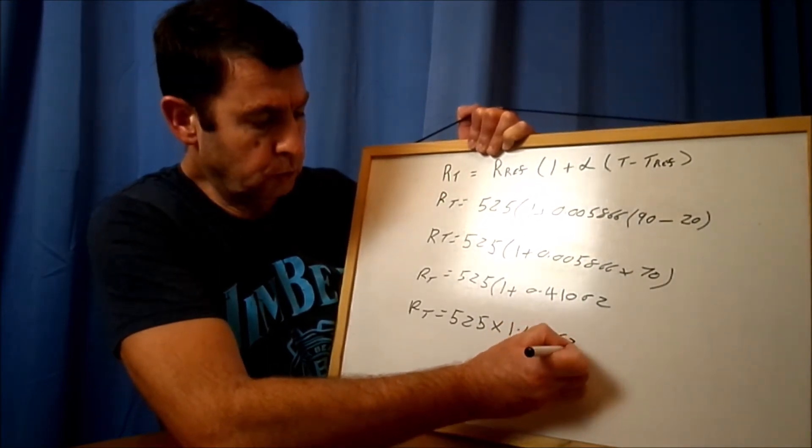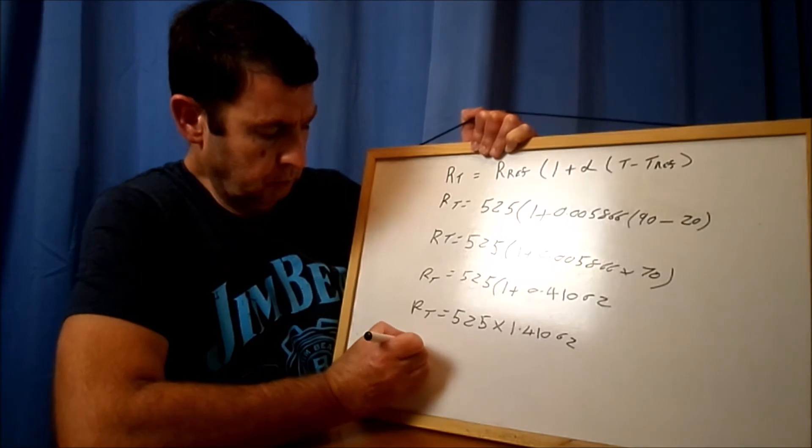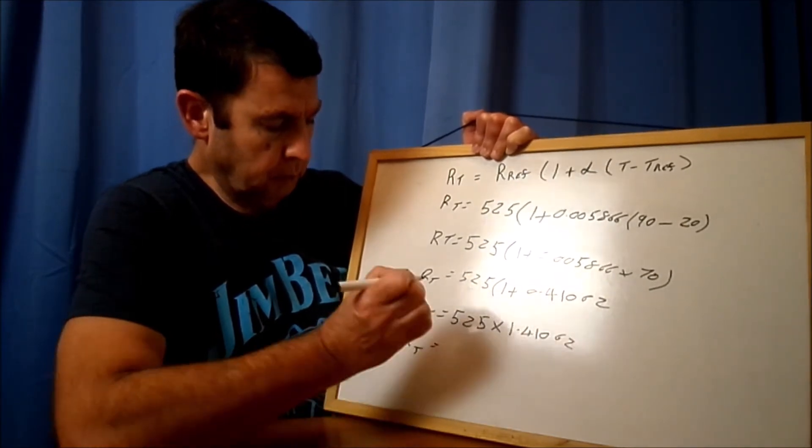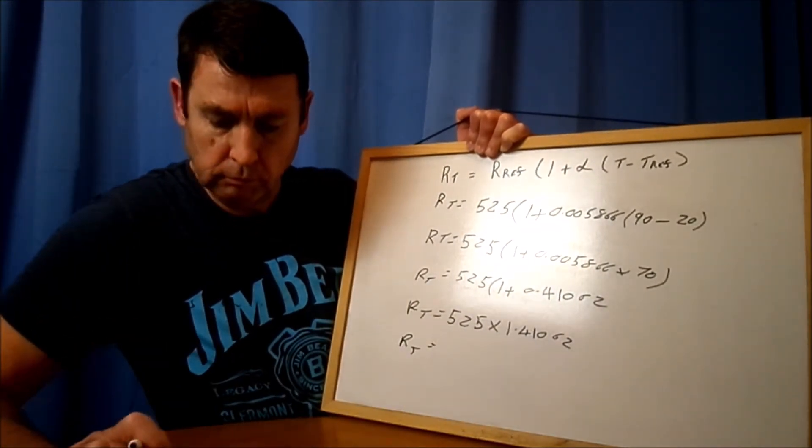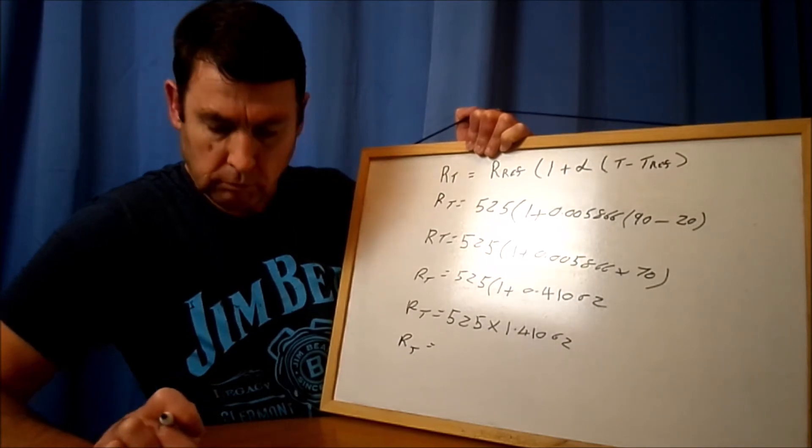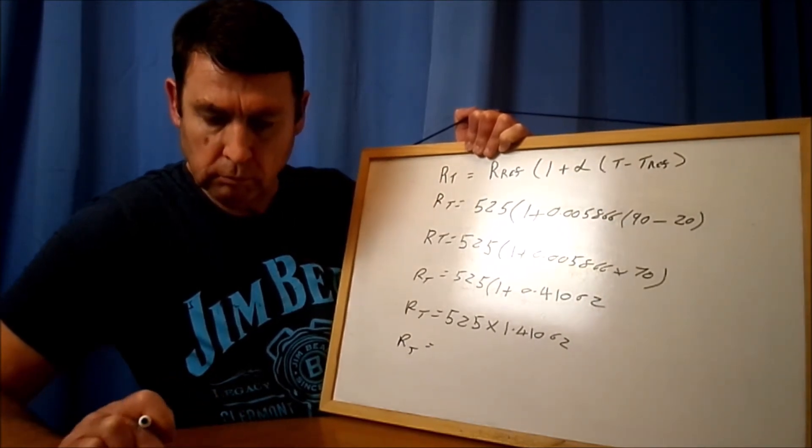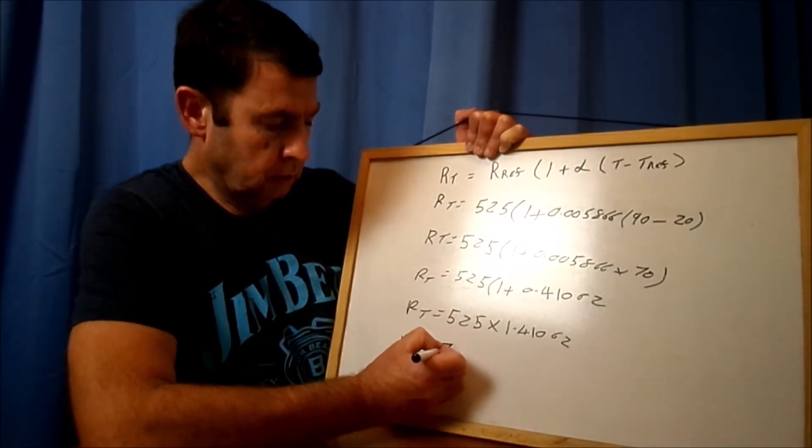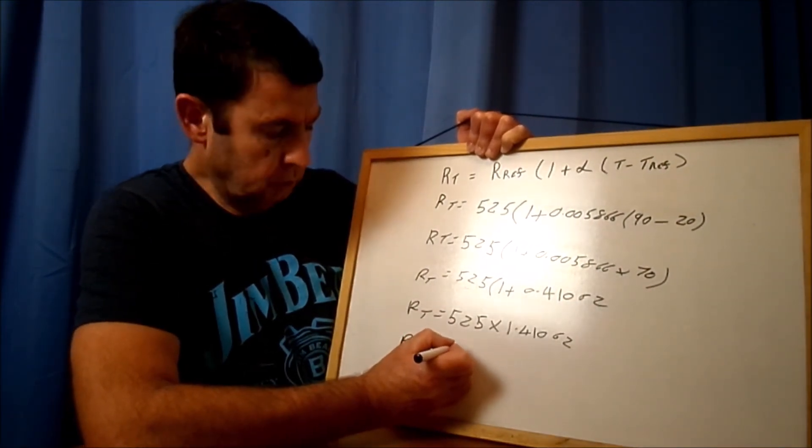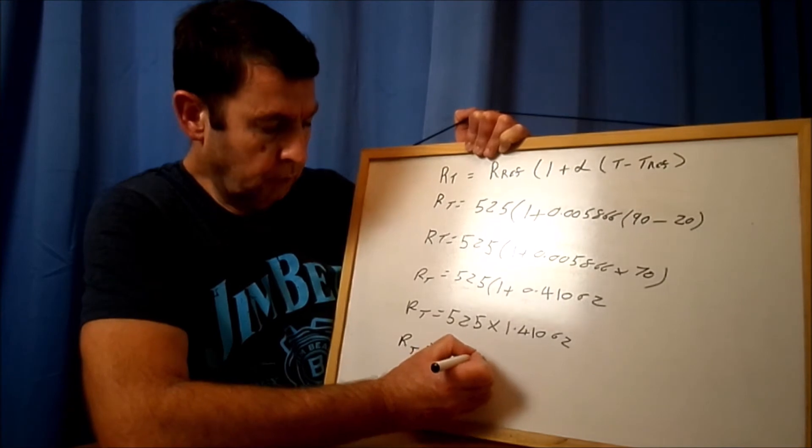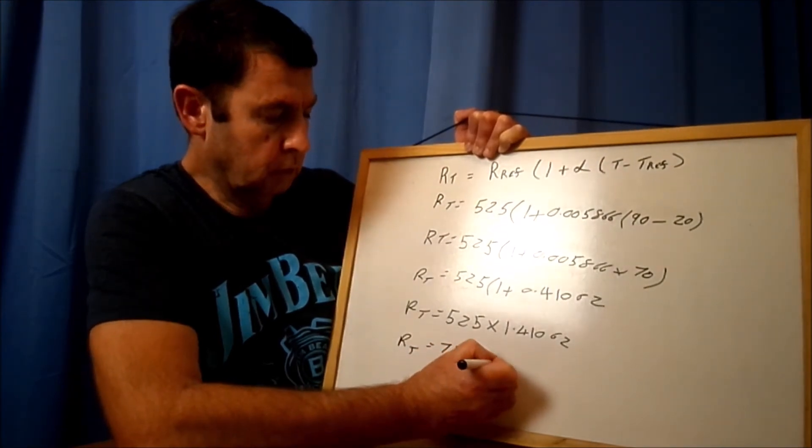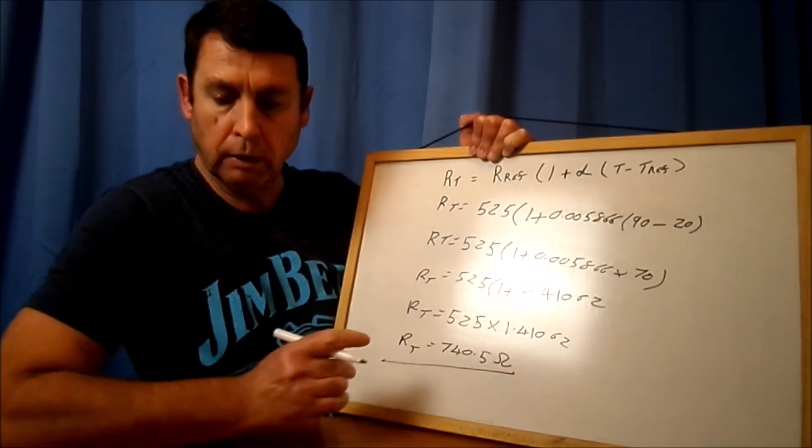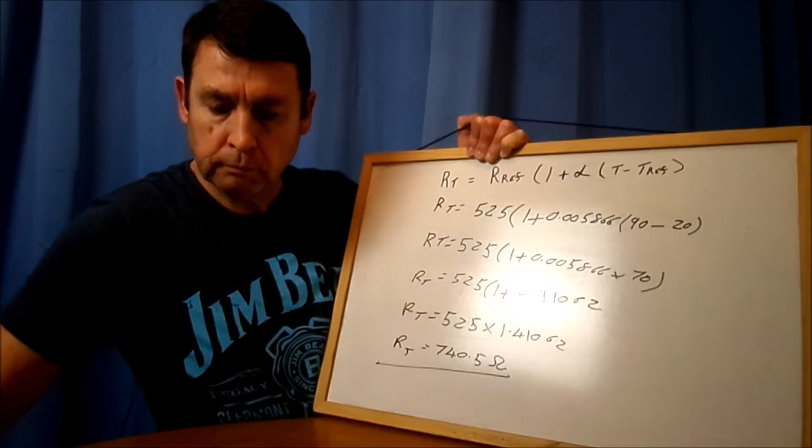So RT is going to be equal to 525 times 1.41062, which will give me a resistance at that temperature of 740.5 ohms, and that's how you do it.